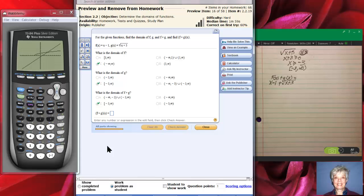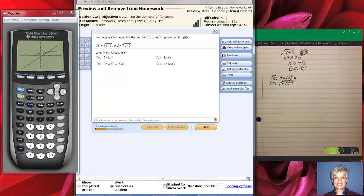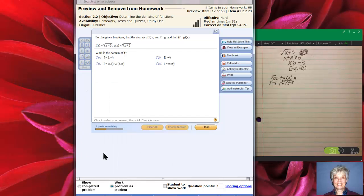Okay, let's go to the next one because I think it's more interesting. Here we have f of x equals the square root of x minus 3 and g of x equals the square root of x plus 3. Let's do this one on paper only.